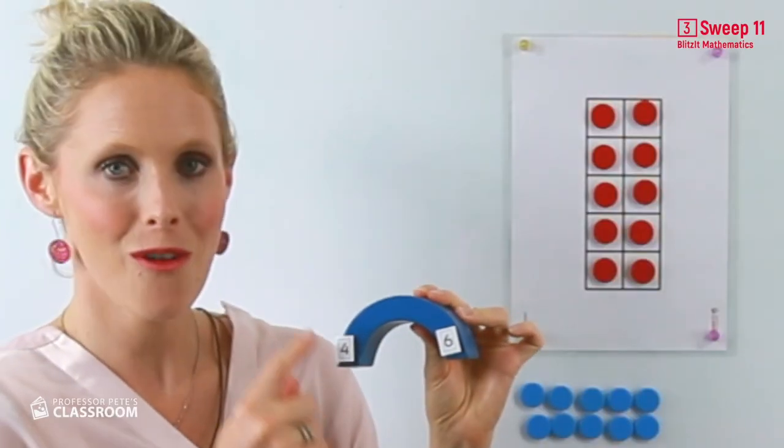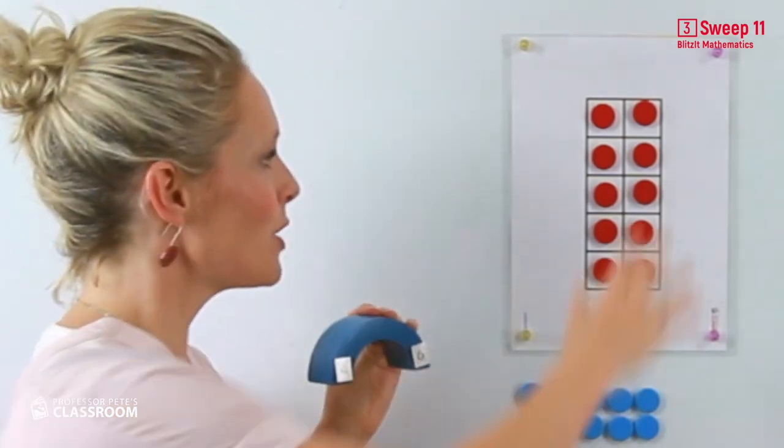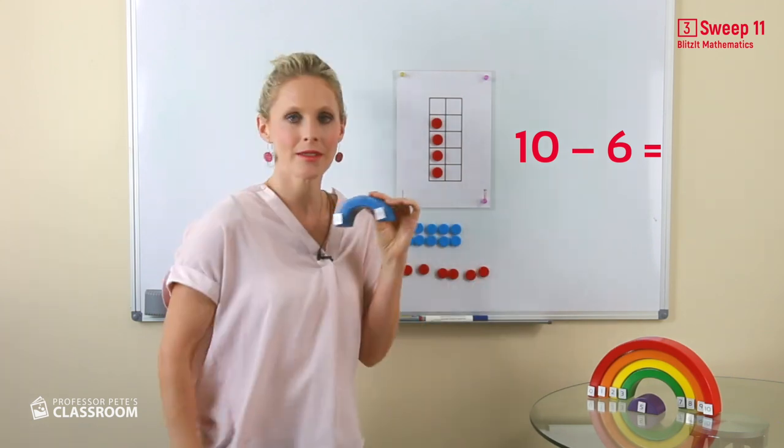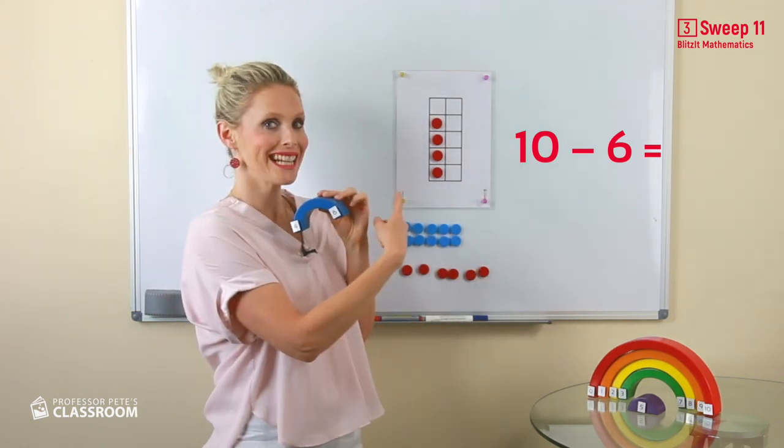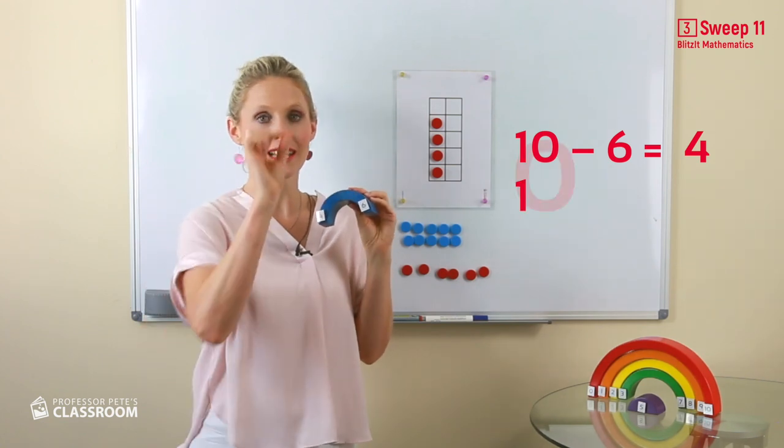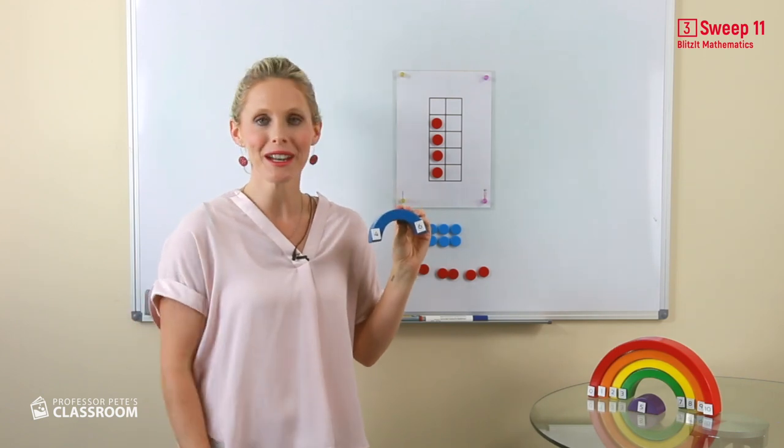4 and 6 always equals 10. So 10 take away 6 equals, ta-da, 4. Because I know that 6 and 4 and 10 are connected. It's wonderful!